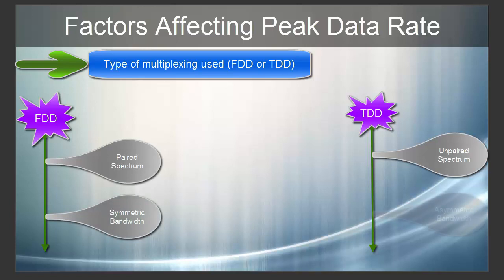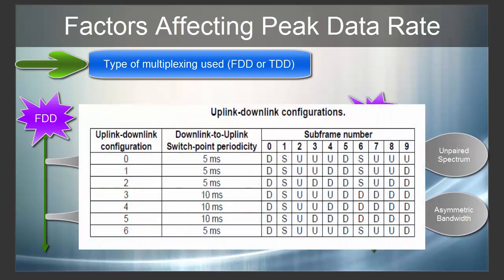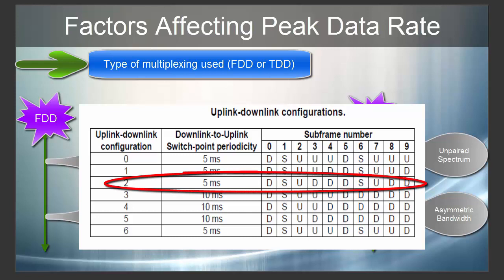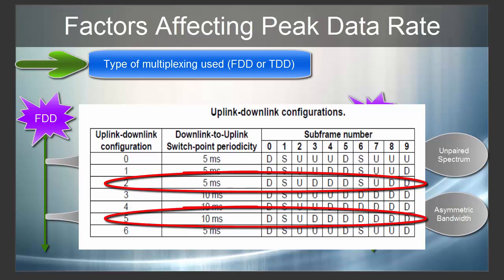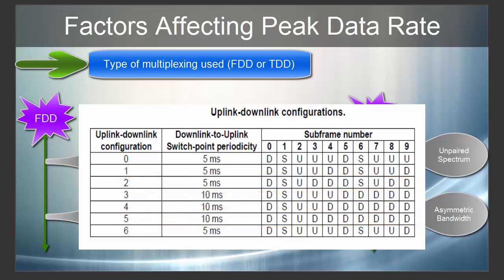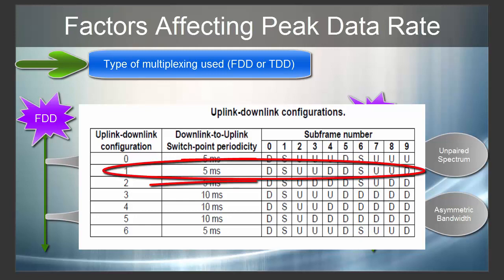TDD has asymmetric bandwidth, as the total bandwidth available is shared by uplink and downlink. In TDD, the radio frame uplink-downlink configuration decides how much bandwidth will be allocated to uplink and how much to downlink. There are 7 possible TDD radio frame configurations. Selection of TDD configuration is an operator's choice. If the service model is heavily download-based, the operator may use TDD config 2 or 5. If heavily upload-based, TDD config 0 or 6. If symmetric, TDD config 1 or 3.